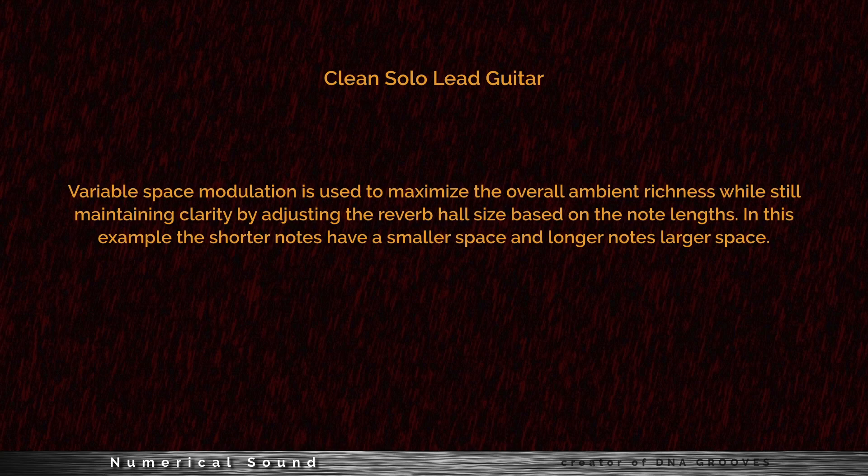Variable space modulation was used to maximize the overall ambient richness while still maintaining clarity by adjusting the reverb hall size based on the note lengths. In this example, the shorter notes have a smaller space and the longer notes have a larger space.